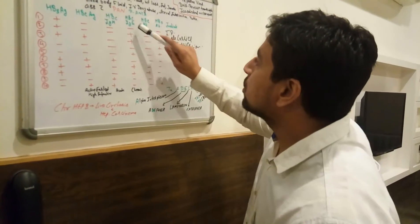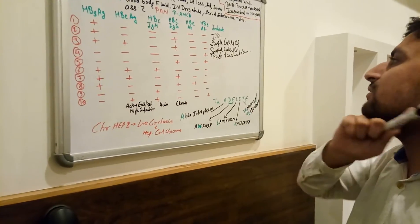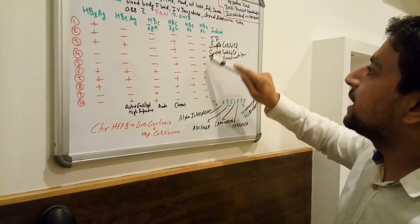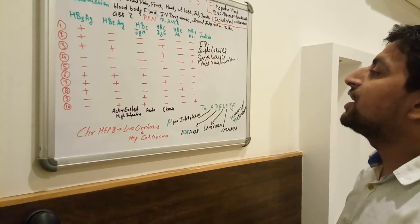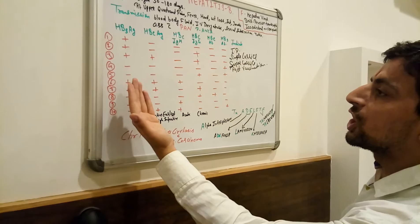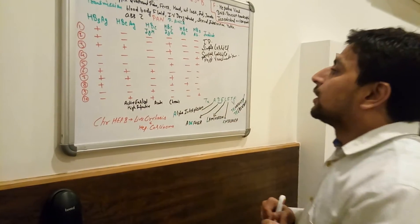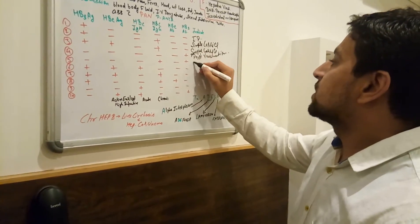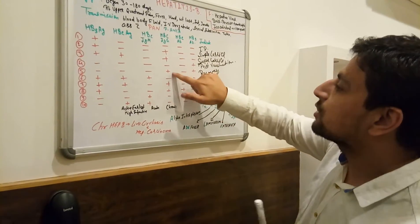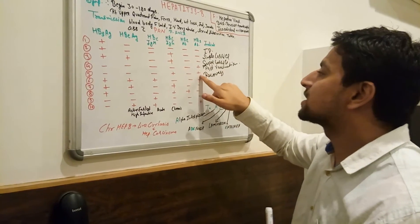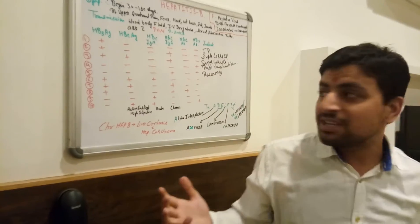If all markers are negative, only Hepatitis B core IgG is positive, and Hepatitis B surface antibody is positive — this indicates recovery. The infection is cured. IgG shows chronicity but no infectivity, and antibodies have developed against the infection. The patient has recovered from Hepatitis B infection.